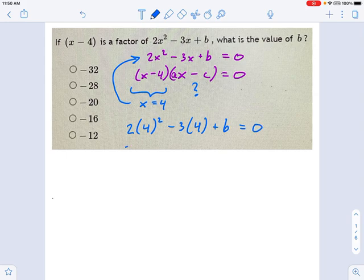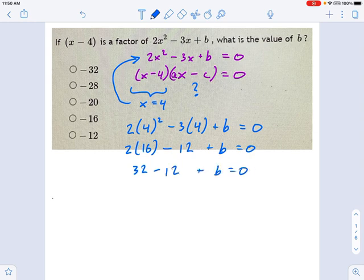Now, if we crunch through the math here, we just get 2 times 16 minus 12 plus b equals 0. Let's keep working on it. We get 32 minus 12 plus b equals 0, and that means 20 plus b equals 0. That means b equals negative 20. So we have our answer right there.